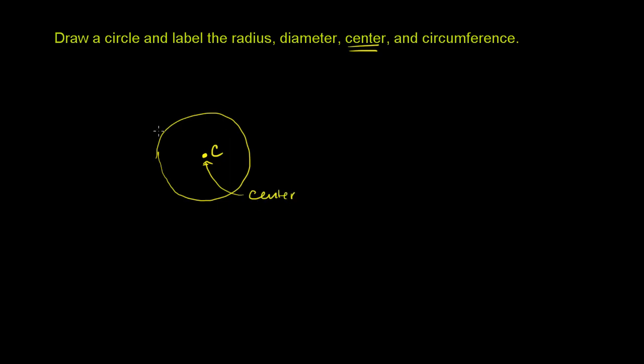Actually, the circle itself is the set of all points that are a fixed distance away from that center. And that fixed distance away from that center, that is the radius.